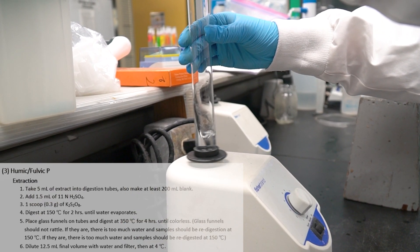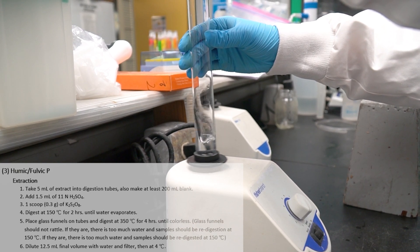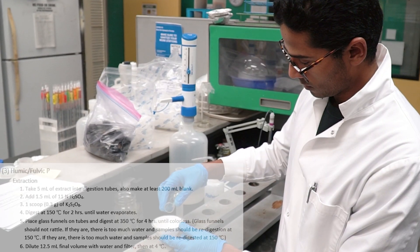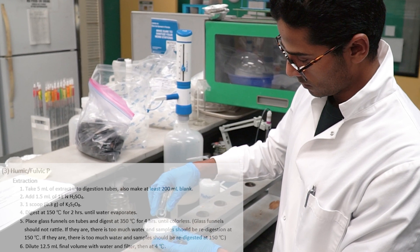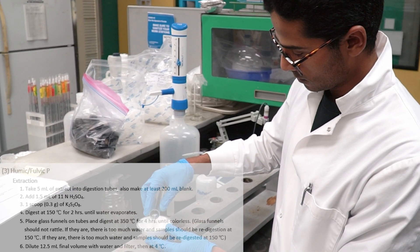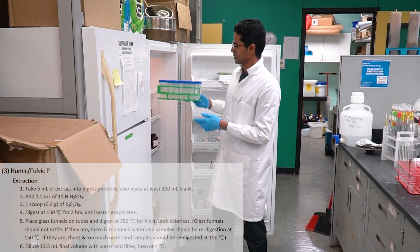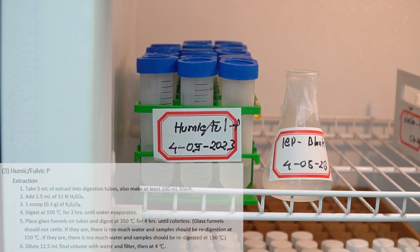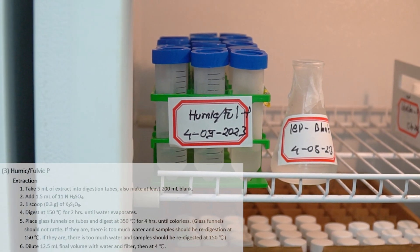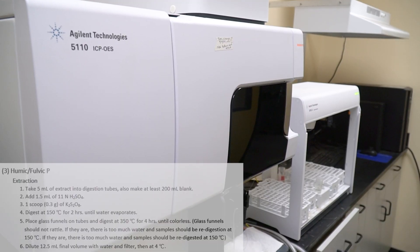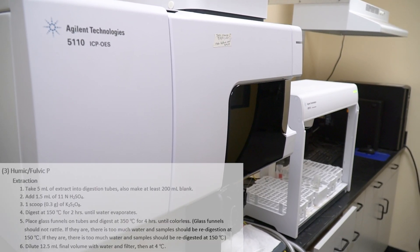Then lastly, we have to dilute the samples after digestion using 15.5 milliliter of DI water, followed by vortex and filter. The samples can be kept at 4 degrees Celsius. The sample is later analyzed using ICP-OES.